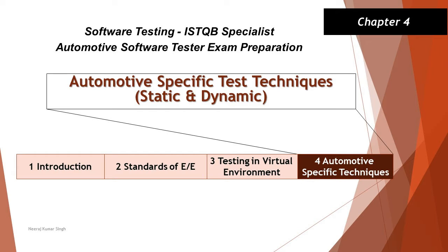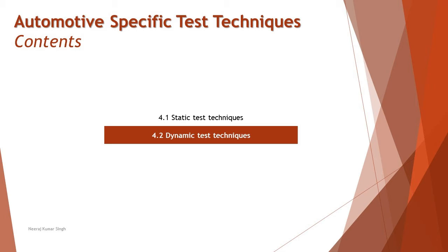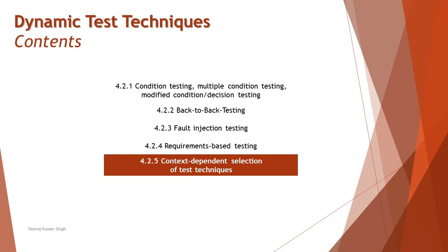Hello friends and greetings for the day. Welcome back to another tutorial on ISTQB specialist automotive tester certification. We are in chapter 4 talking about automotive specific test techniques, and as part of this we are moving into the second segment — dynamic test techniques. In this tutorial we're getting into the last part of it: 4.2.5, context dependent selection of test techniques.